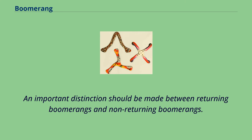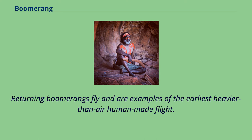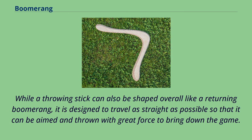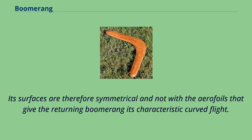An important distinction should be made between returning boomerangs and non-returning boomerangs. Returning boomerangs fly and are examples of the earliest heavier-than-air human-made flight. A returning boomerang has two or more airfoil wings arranged so that the spinning creates unbalanced aerodynamic forces that curve its path so that it travels in an ellipse, returning to its point of origin when thrown correctly. A throwing stick, by contrast, is designed to travel as straight as possible so that it can be aimed and thrown with great force to bring down game. Its surfaces are therefore symmetrical and not shaped with the airfoils that give the returning boomerang its characteristic curved flight.